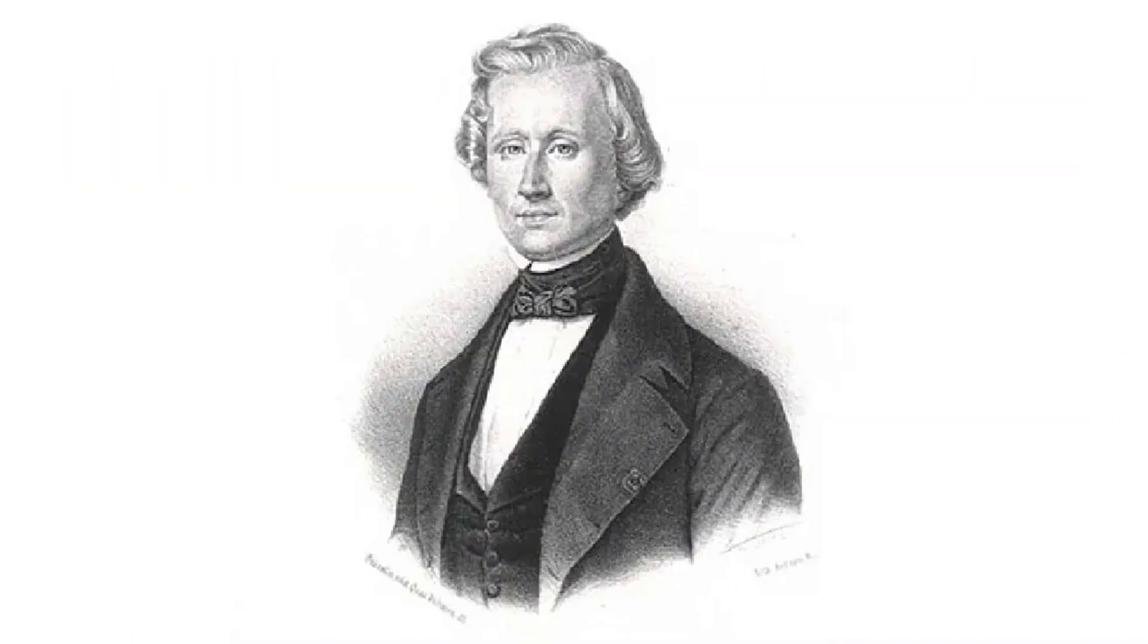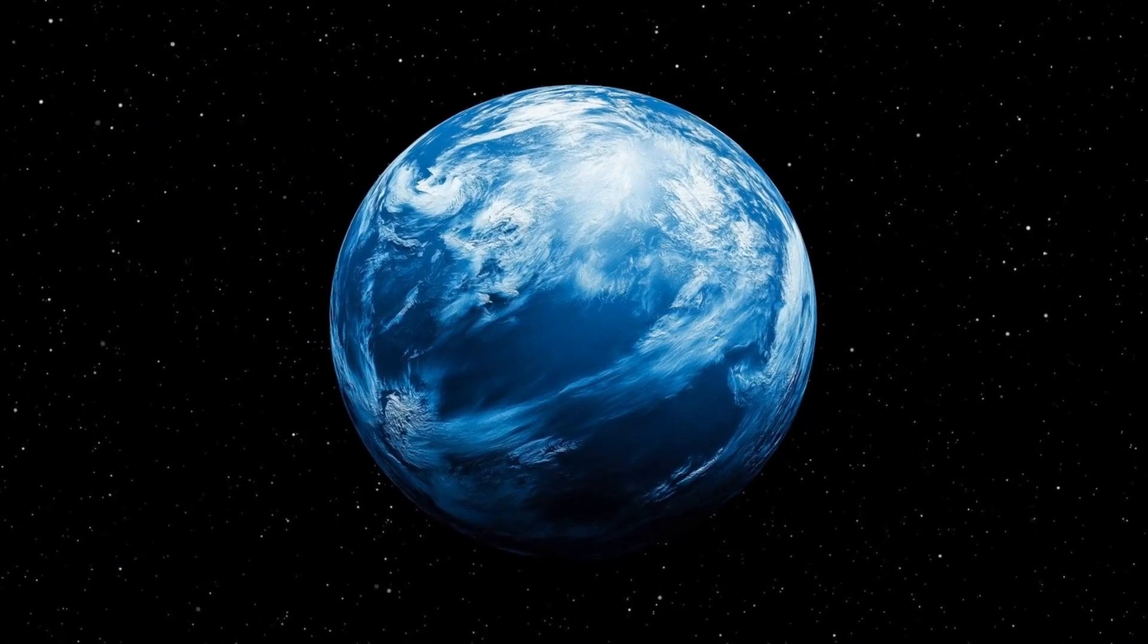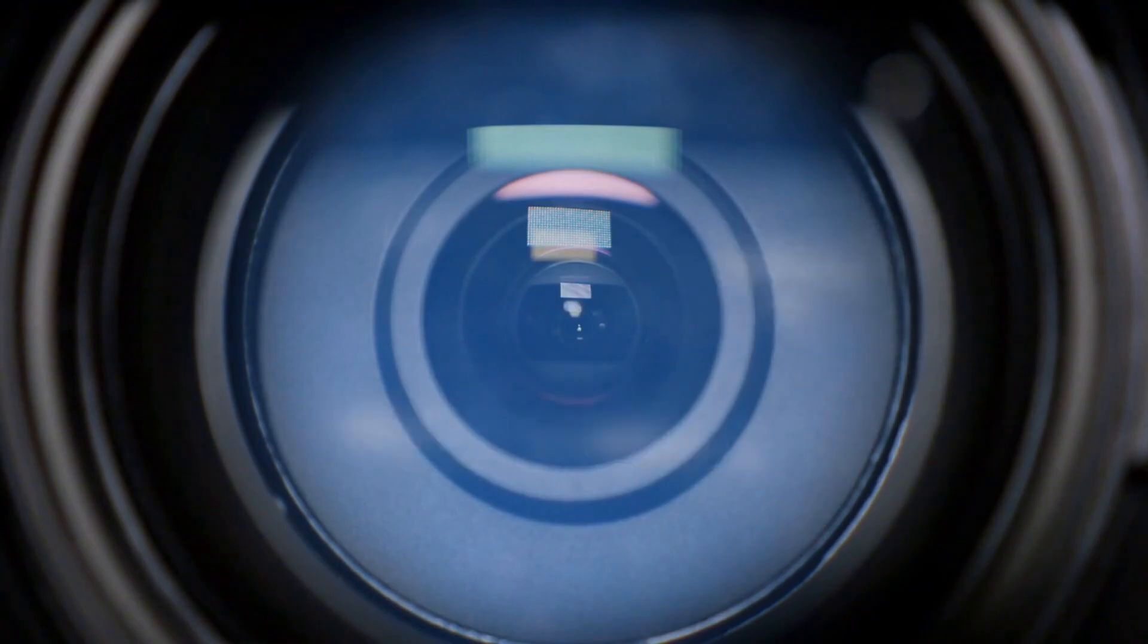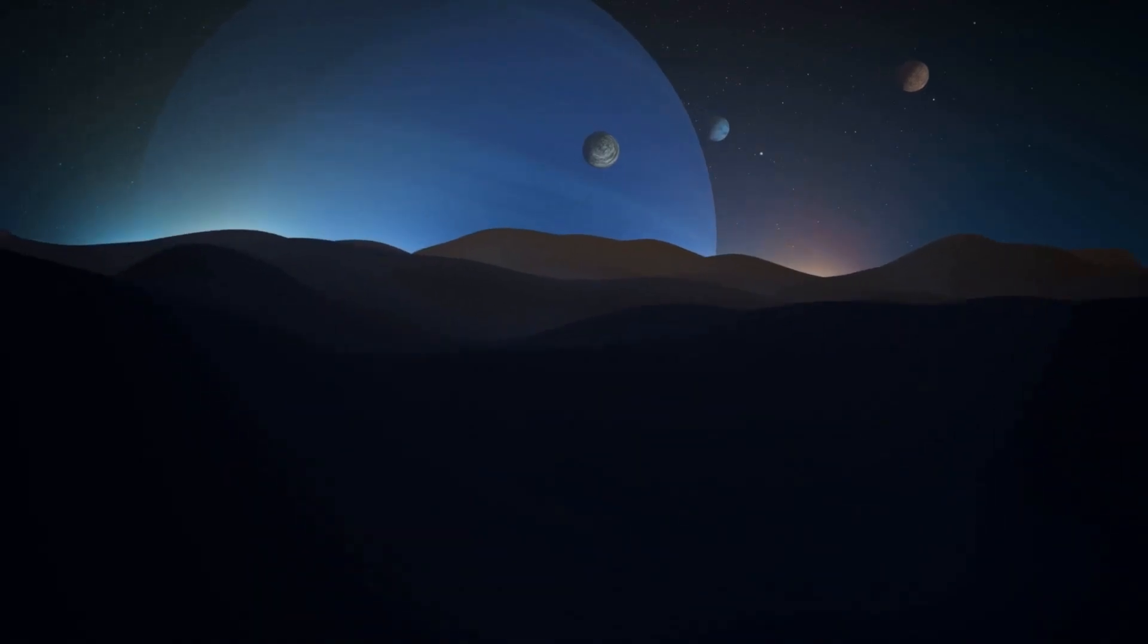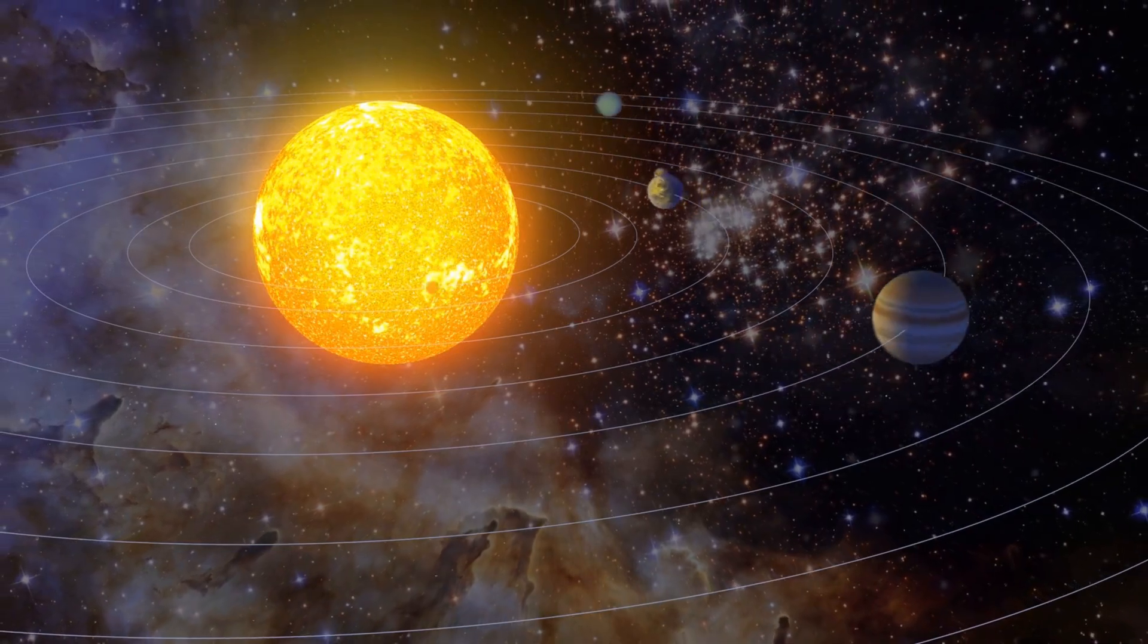French astronomer Urbain Le Verrier crunched the numbers and predicted the location of the invisible culprit. In 1846, German astronomer Johann Galle pointed his telescope to the exact coordinates Le Verrier had calculated. And there it was. Neptune, our solar system's eighth planet.